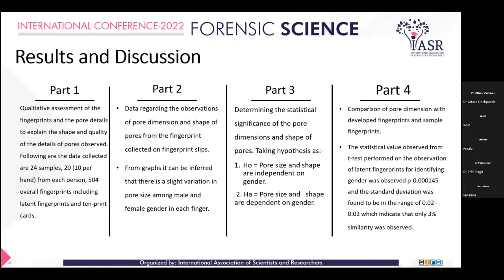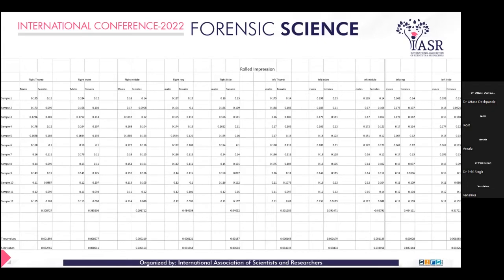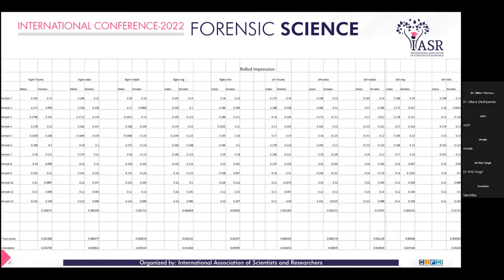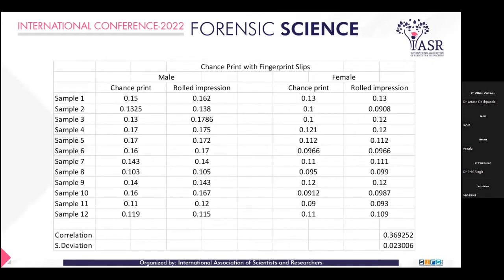For the latent fingerprints, the P value (statistical significance value) I obtained was 0.000145, and the standard deviation was around 0.02 to 0.03, which means only about 3% similarity was observed between male and female. This is the full Excel sheet showing how values were collected, along with T-test and standard deviation calculations. The separate Excel sheet is for rolled impressions only, and another Excel sheet is for the comparison of chance prints with rolled fingerprints.